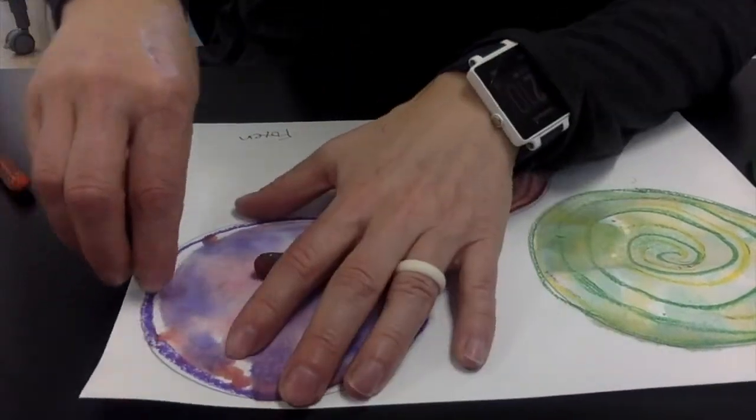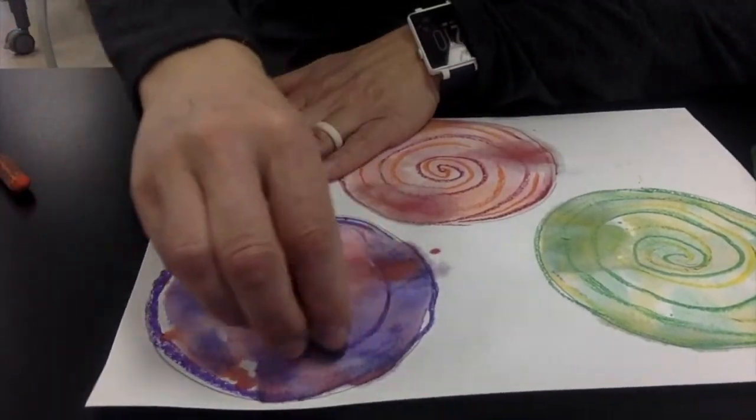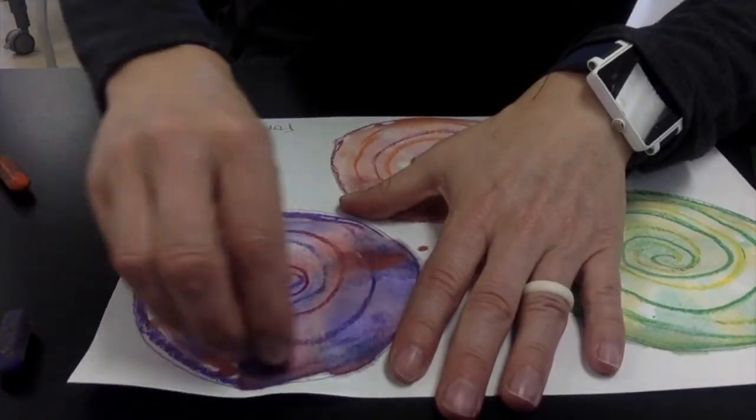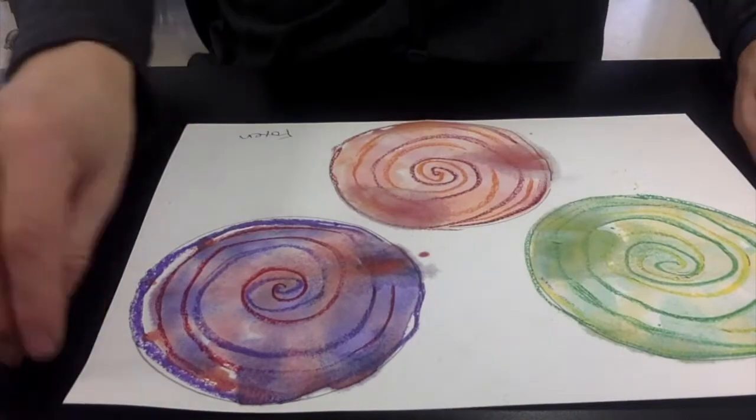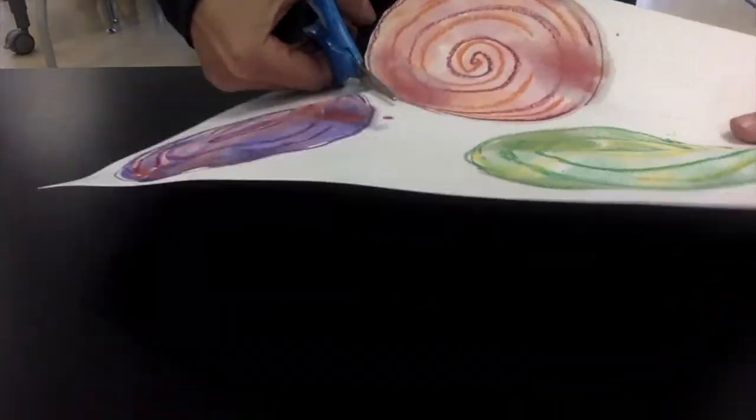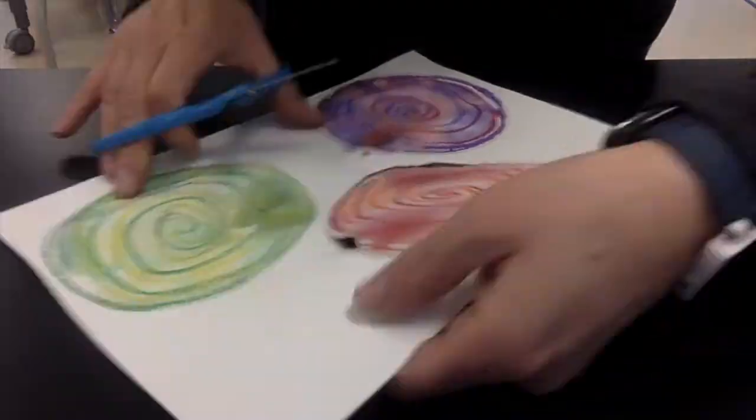Again, begin with a circle, take that oil pastel to make a spiral inside, and another color that you used a lot of to make your watercolors. Now that I've got that done, let's take our scissors and cut out the three circles.